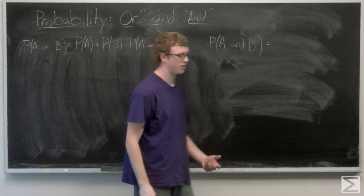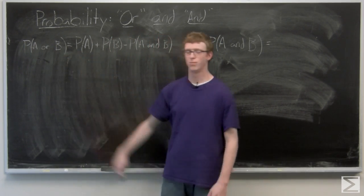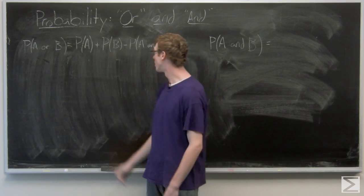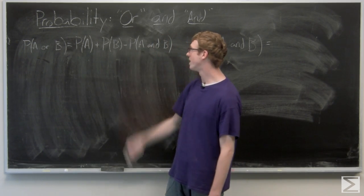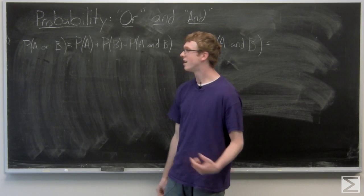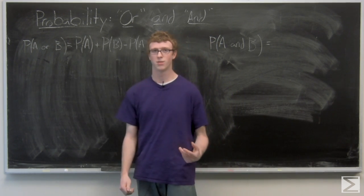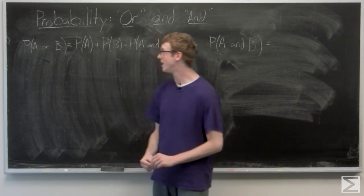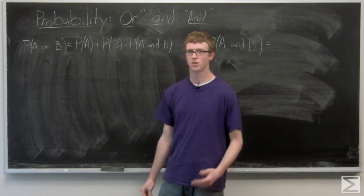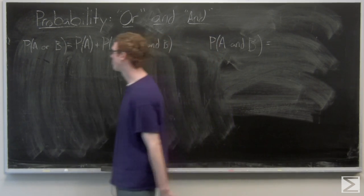Now there's a special case for this. When A and B are mutually exclusive — meaning that they can't occur at the same time — we know that the probability of A and B is going to be zero. So for mutually exclusive events, abbreviated ME, the probability of A or B is just the probability of A plus the probability of B.